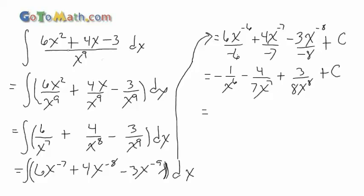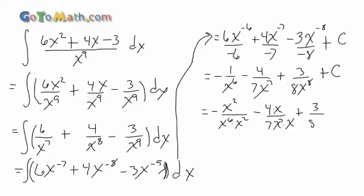If we want to get this all back into one fraction, we'll need to get a common denominator. We've got six x's, seven x's, eight x's. So we're going to need to multiply the first term by x squared top and bottom, and the second term by x top and bottom, and leave the third term alone.